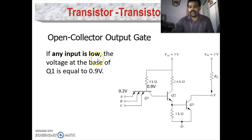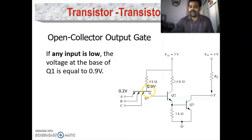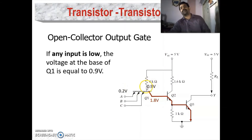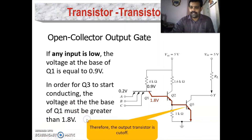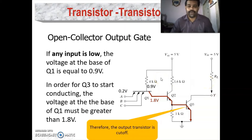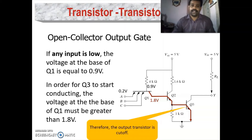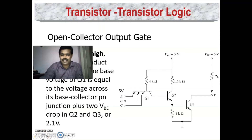The second condition is when any one input is low. This condition is similar to the previous one. If any one input is low, one of the emitter-base junctions will be forward biased, voltage at the base will be 0.9 V which is less than 1.8 V required, so Q3 is cut off and output is high.